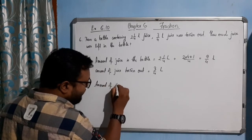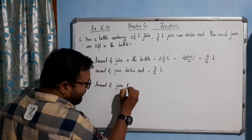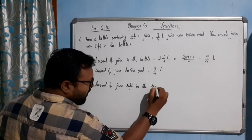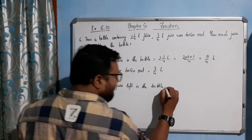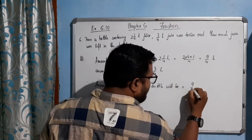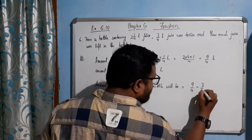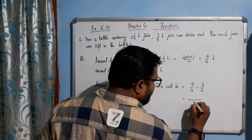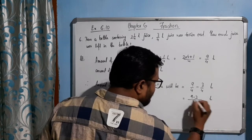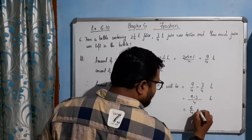Amount of juice left in the bottle will be how much? 9 by 4 minus 3 by 4. 4 is same, 9 minus 3 liter, 6 by 4 liter.